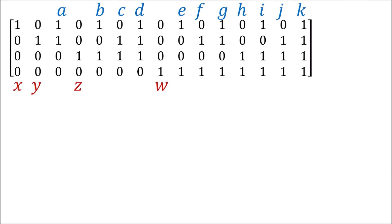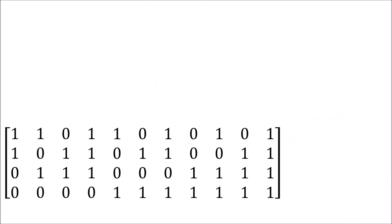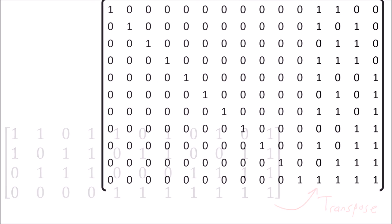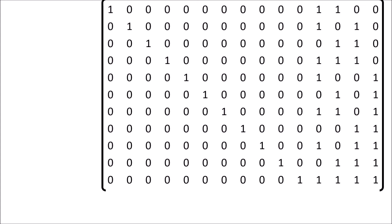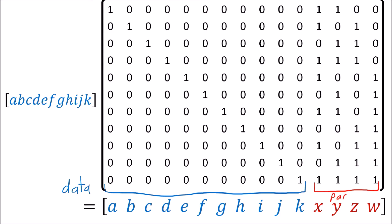To get the generator matrix from the parity check matrix, we move all the parity columns to the right side — this is called the systematic form of H. If we take the remaining columns and transpose them, and place a large identity matrix on the left, we get the generator matrix for that code. The identity matrix will copy all of the message bits, and the other columns will compute the parity check bits.